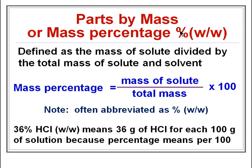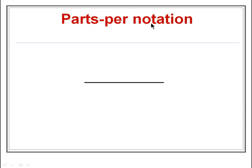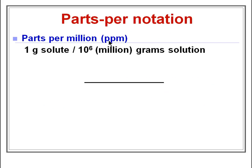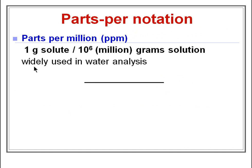We can also express concentration using parts per notation. Number one is parts per million, represented by the abbreviation ppm. One ppm means 1 gram of solute per 1 million grams of solution, and 1 million means 10 to the power of 6 grams.